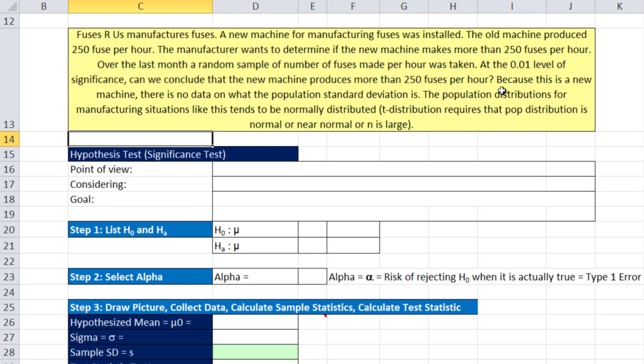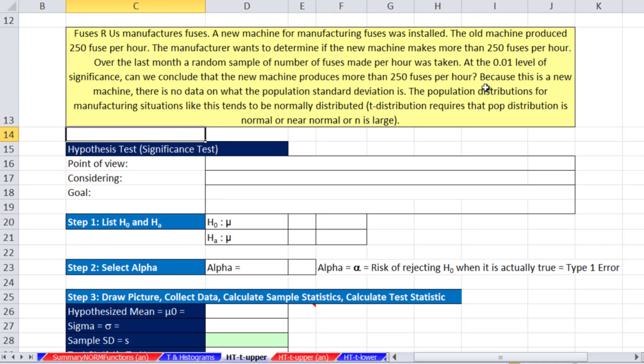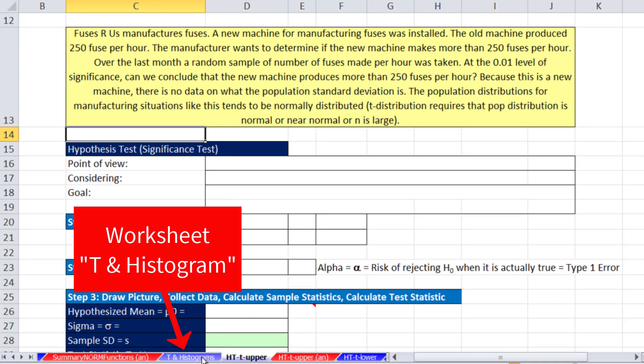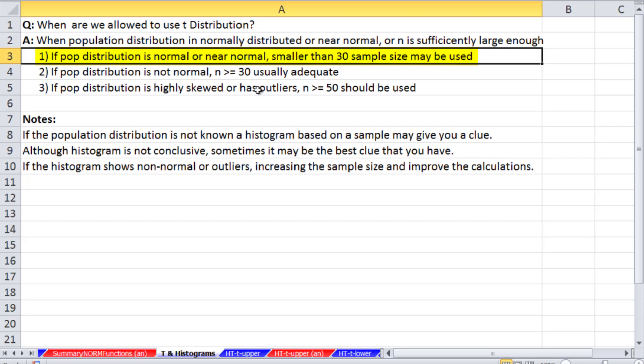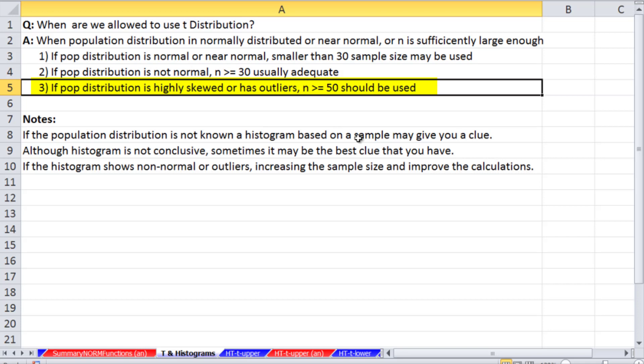Now we have to consider for the t-distribution whether or not we can actually use that distribution. Over here on the t-histogram, here are guidelines. When are we allowed to use the t-distribution? When the population distribution is normally distributed or near normal, or n is sufficiently large. If the distribution is normal, then you can use sample sizes smaller than 30. If it's not normal, n greater than or equal to 30 should be used. If it's skewed, then n equals 50.